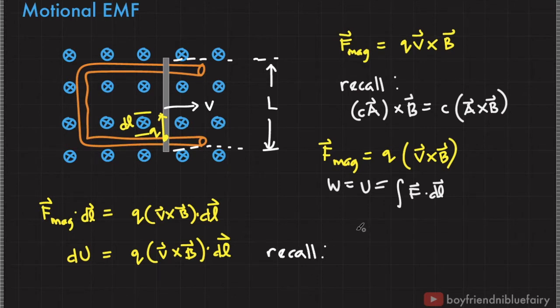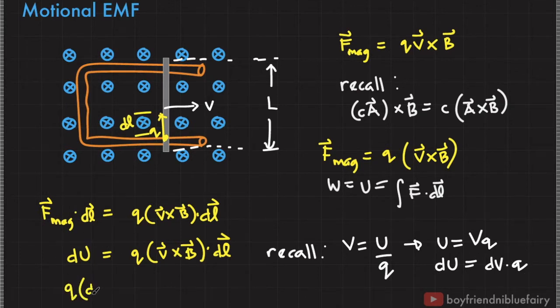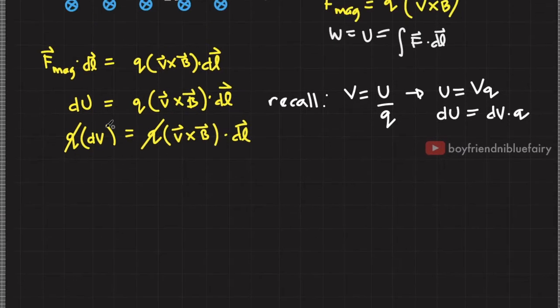Now recall the definition of electric potential. Electric potential is equal to electric potential energy divided by Q, and we can rewrite this as U equals VQ. If you have an infinitesimal amount of electric potential energy, then this is also equal to an infinitesimal amount of potential times the charge. So I'm going to plug this here.